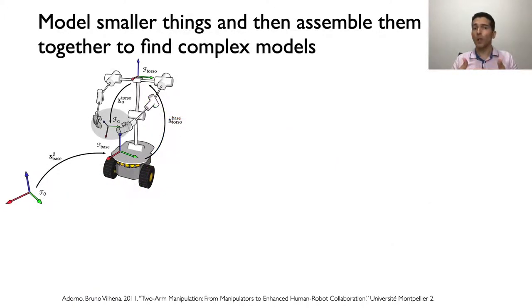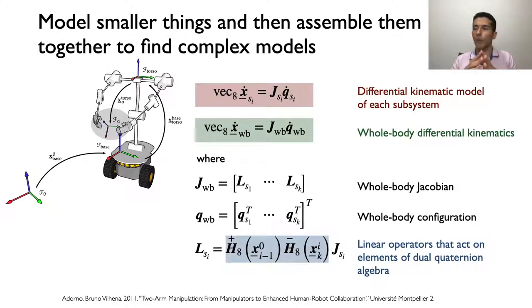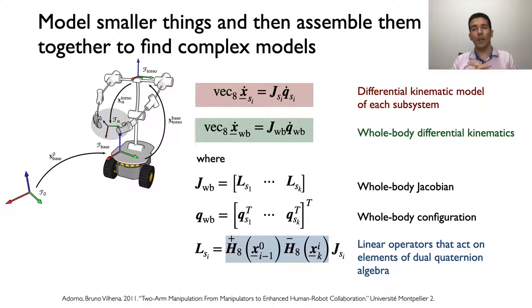The differential kinematics is given by vec8 of x-dot equals J times q-dot, where x-dot is the time derivative of the end effector pose, J is the analytical Jacobian matrix found using dual quaternion algebra, and q-dot is the time derivative of the configuration vector. We can combine smaller modules into more complex ones. For instance, a mobile manipulator composed of a mobile base, a torso, and two arms — each subsystem has its own differential kinematic model — can be combined to obtain the whole body differential kinematics, which relates the time derivative of the whole body configuration to the time derivative of a unit dual quaternion of interest, such as one of the end effector poses. These whole body models are very useful for motion control, resulting in a highly redundant system that can be exploited to perform additional tasks such as obstacle avoidance.